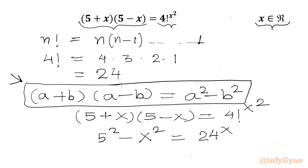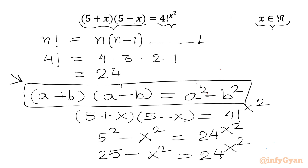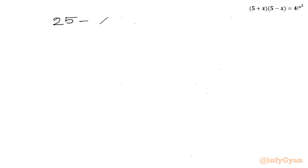Using the difference of two squares formula, 4 factorial equals 24, so the right hand side is 24 raised to the power x squared. Now 5 squared is 25, so we have 25 minus x squared equal to 24 raised to the power x squared. Now we have to solve this equation.